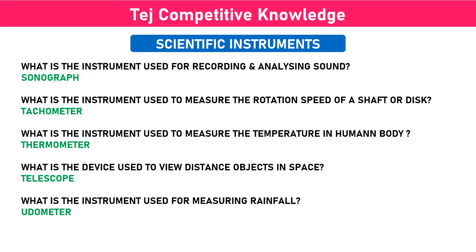What is the instrument used to measure the rotation speed of a shaft or disc? Tachometer. What is the instrument used to measure the temperature in the human body? Thermometer.